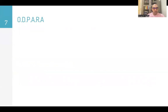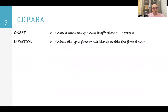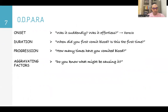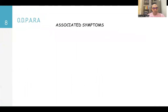For analysis of the presenting complaint, use ODBARA. Onset: 'Was it sudden and effortless, like in varices?' Duration: 'When did you first vomit blood? Is this the first time?' Progression: 'How many times have you vomited blood?' Aggravating factors: 'Do you know what might be causing it?' And relieving factors: 'Do you get relief from antacids?'